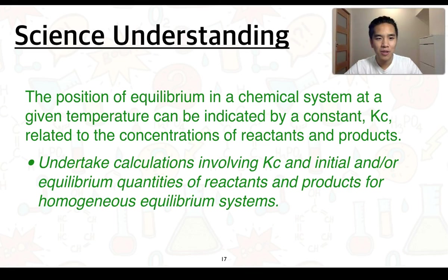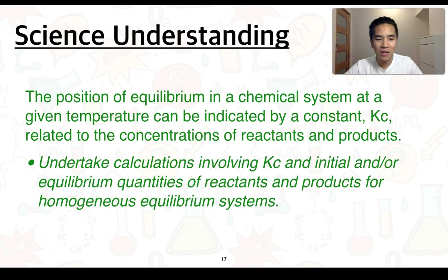In the second part of subtopic 2.2, we're going to start with this science understanding: the position of an equilibrium in a chemical system at a given temperature can be indicated by a constant Kc, related to the concentrations of reactants and products. We're focusing in particular on undertaking calculations involving Kc.